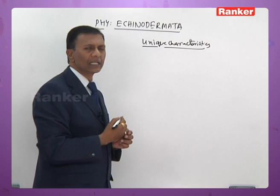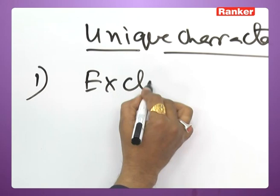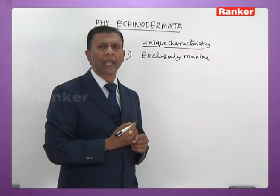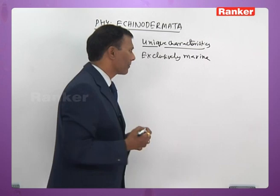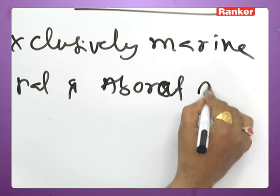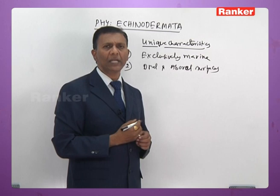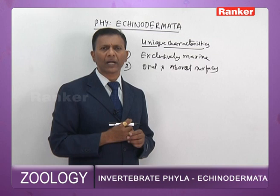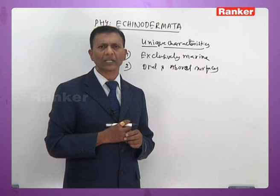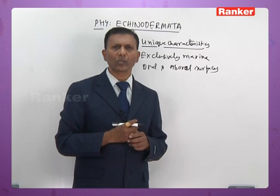The unique characteristics of echinoderms: first, all are exclusively marine. In Porifera there are two freshwater families — Potamilidae and Spongillidae — but in echinoderms, all are exclusively marine. Second, instead of dorsal and ventral surfaces, the body is distinguishable into oral and aboral surfaces. In most echinoderms, the oral surface is directed downwards and the aboral surface is directed upwards.